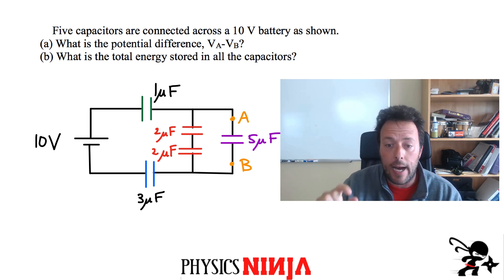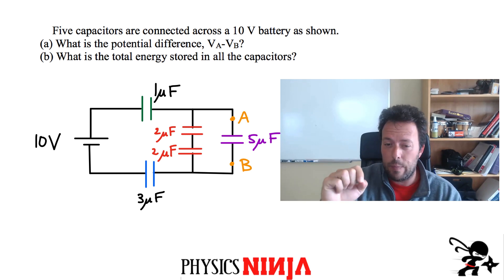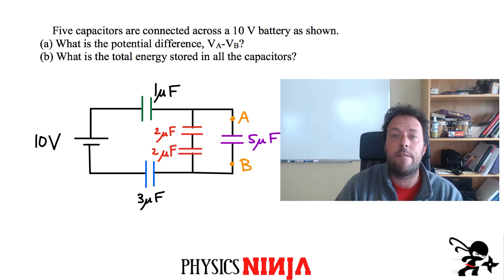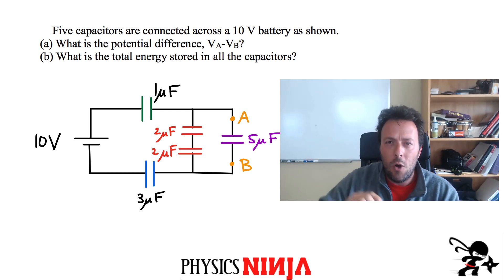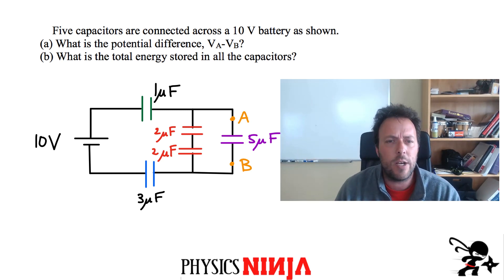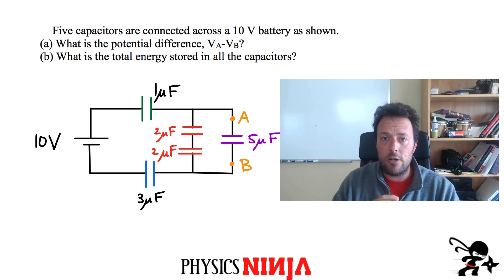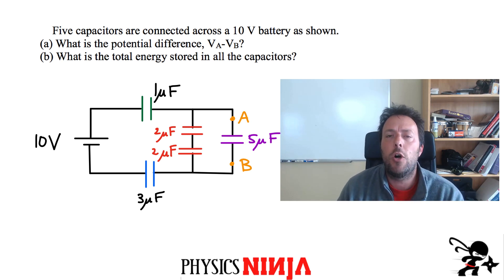The first question is: how do you find the voltage across, for example, the 5 microfarad capacitor? What is the potential difference between points A and B in that circuit? The second question is: what is the total energy stored in all of the capacitors? So let's go ahead and set up the problem.